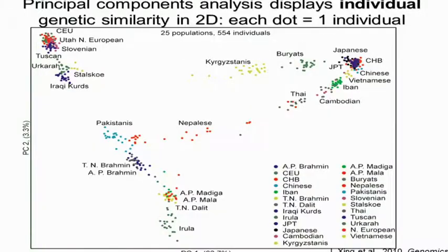With high-density data we can look not at populations — which are always somewhat artificial — but at individuals. On this two-dimensional principal components analysis display, each dot is an individual. What's remarkable is that this sort of reconstructs a map of Eurasia, showing the correlation between genetic similarity and geographic location. But another thing it shows is that there is overlap among populations in terms of their membership. So while populations do tell us something about people, they are not by any means perfect categories.